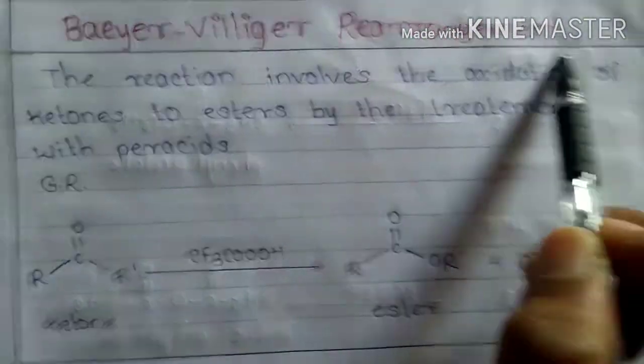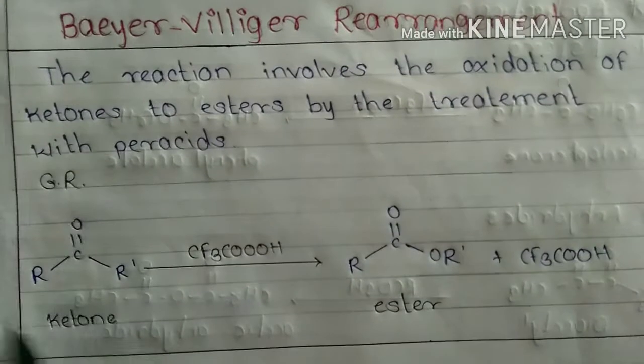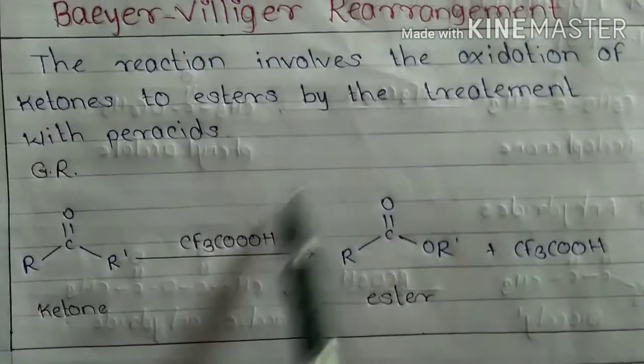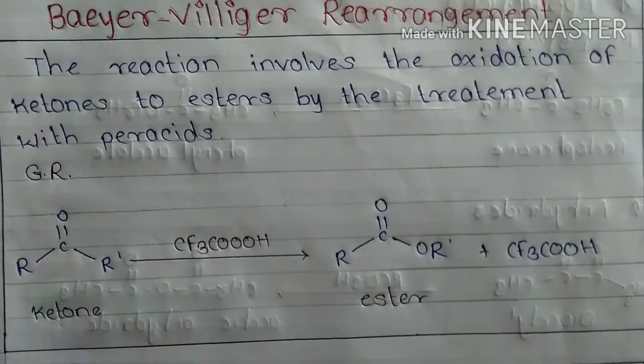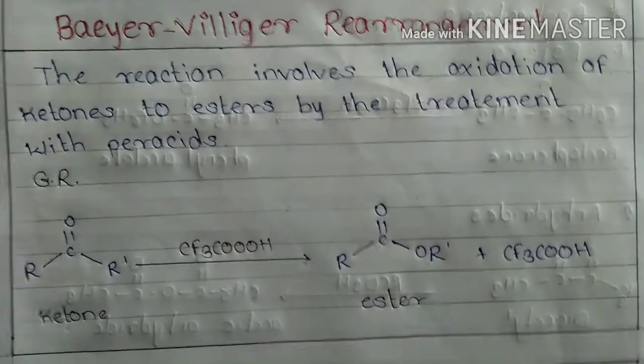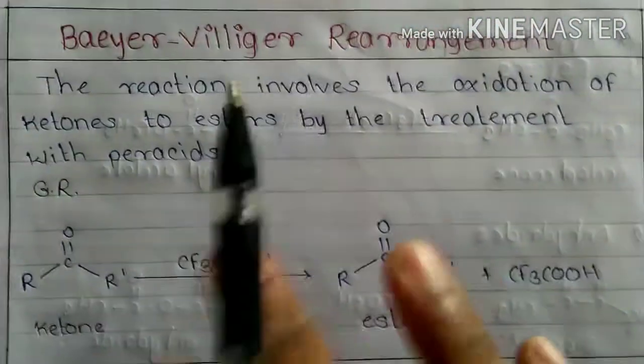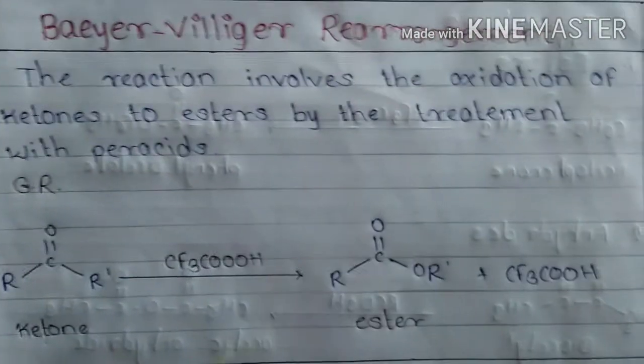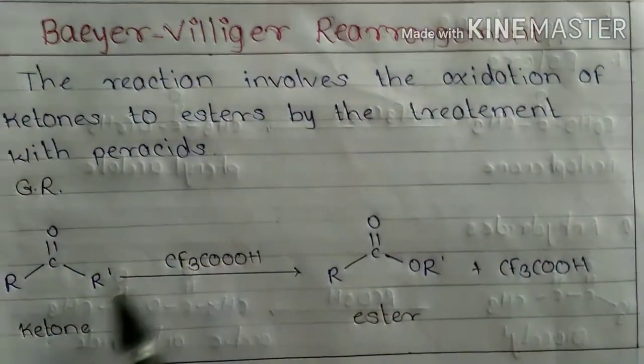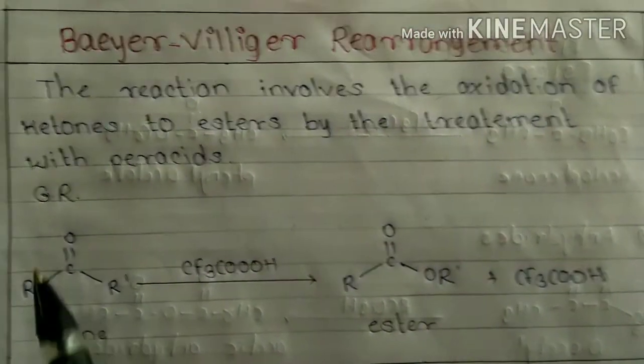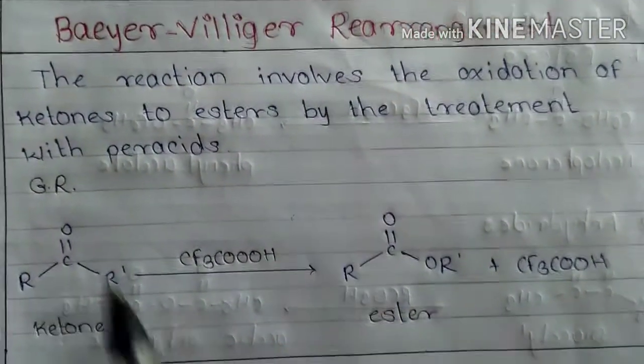The reaction involves oxidation of ketones to esters by the treatment with peracid, known as Baeyer-Villiger rearrangement. The overall reaction is an insertion of oxygen atom between the carbonyl and the adjacent carbon in the ketone.